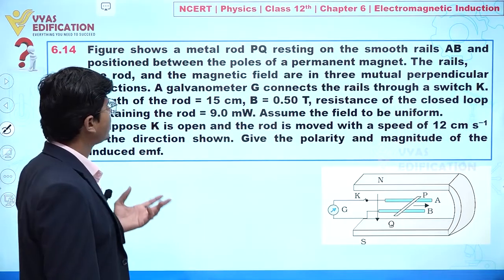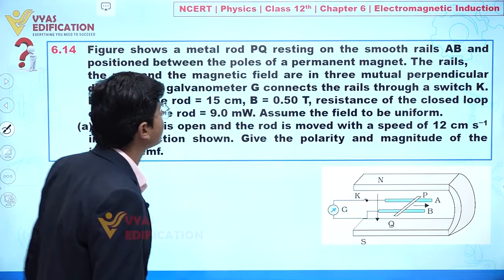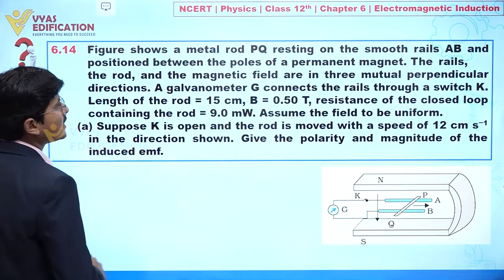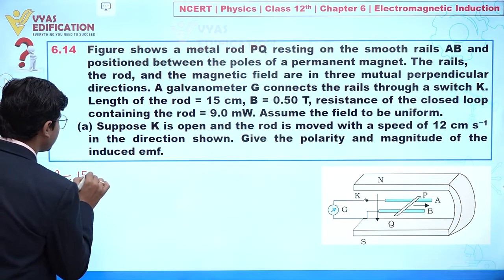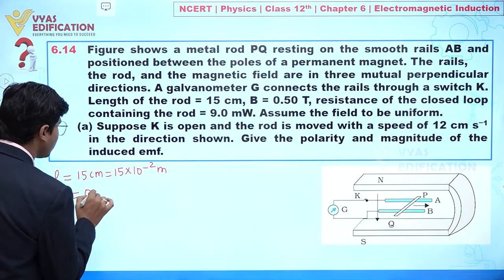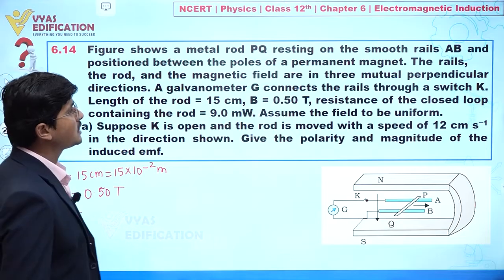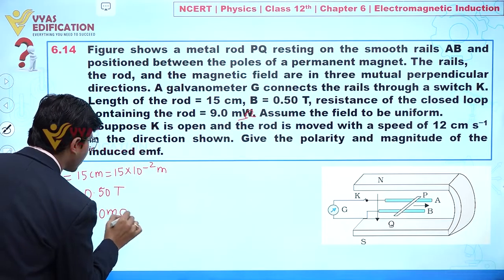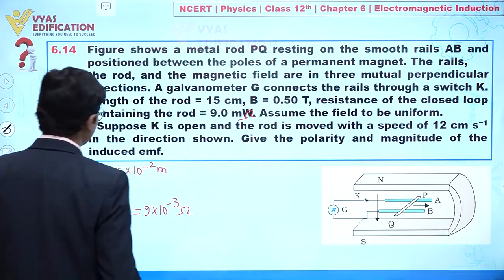The length of the rod is 15 centimeters, which is 15×10⁻² m. The value of B is 0.50 tesla. The resistance of the closed loop containing the rod is 9.0 milliohm, which equals 9×10⁻³ ohm. We assume the field is uniform.